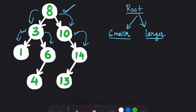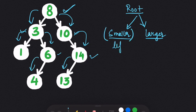Same with 10 — the right node of 10 is 14, which is greater than 10. At node 14, the left child is 13, which is smaller than 14. And for node 6, the left node is 4, which is smaller than 6. So the left node of any root is always smaller than the root, and the right node is always larger than the root.